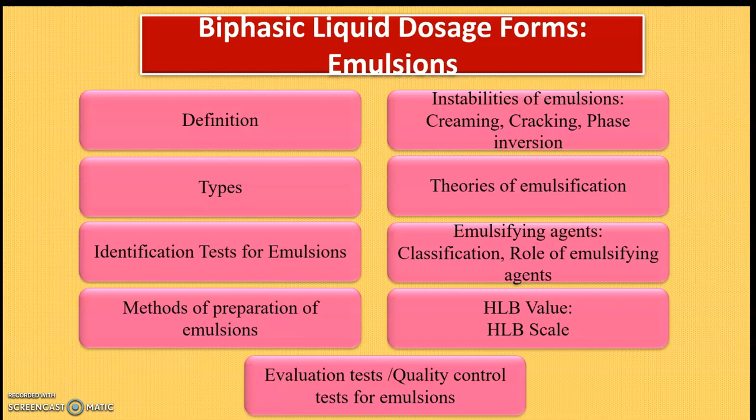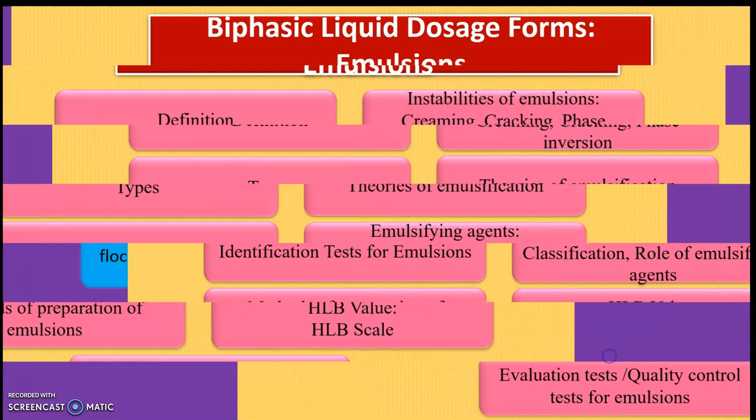Additional questions that may be asked in this chapter are: why do most emulsions appear opaque, and why is a primary emulsion necessary in the formation of emulsions. These points are important from both theory and practical points of view.